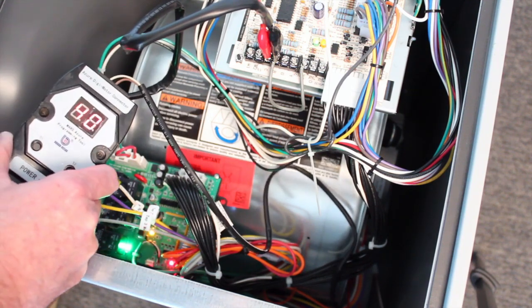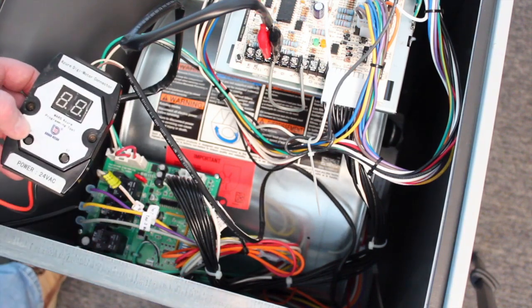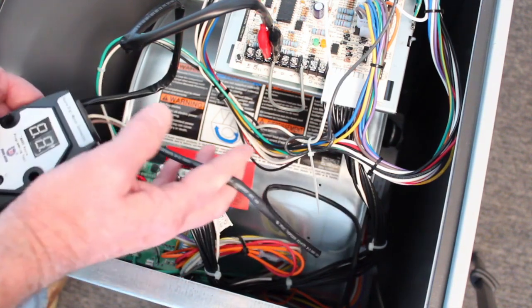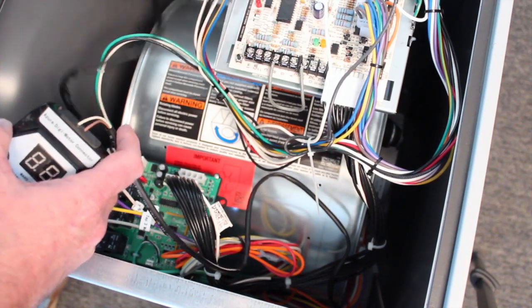And then to lock this in, we remove power to the unit. Now this tool can then be disconnected from the Azure motor and removed from the 24 volt source, and we're all done.